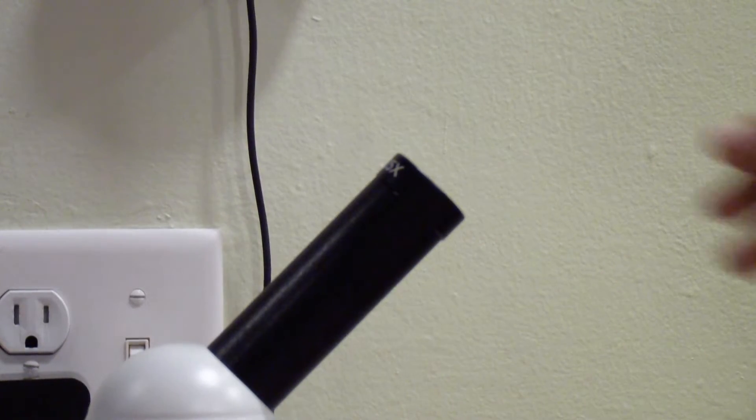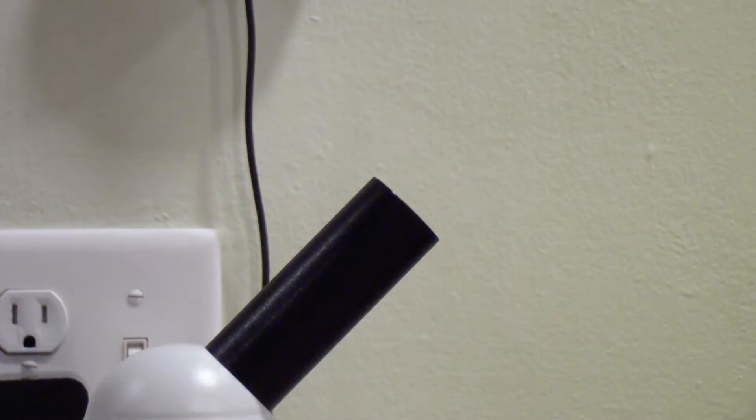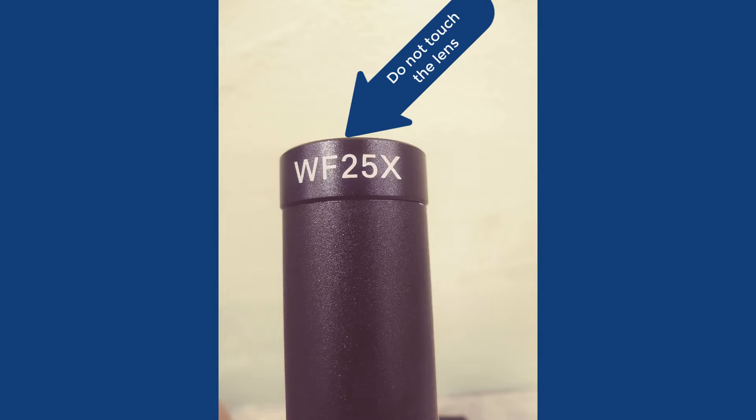To switch out the ocular lens, simply pull the lens out and drop a different ocular lens in. Be careful not to touch the lens with your fingers.